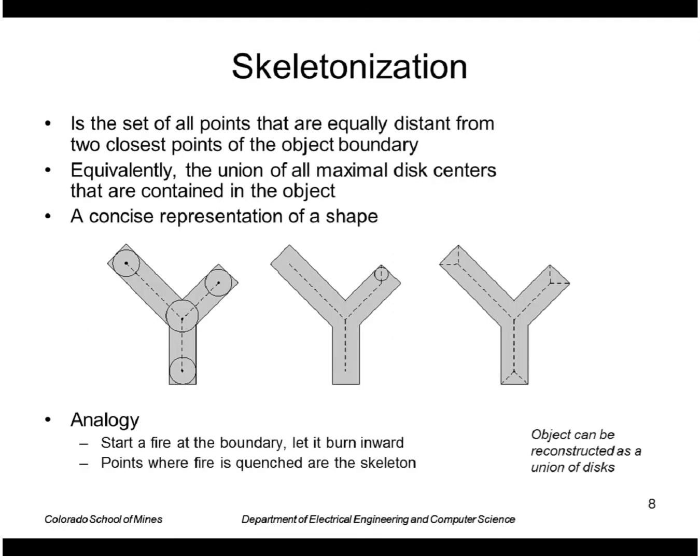Skeletonization is very useful for extracting properties of regions. It's a concise representation of a shape. So basically we want the skeleton or just a few line segments that describe the shape like this. It's defined as the set of all points that are equally distant from the two closest points of the object boundary. Equivalently, the union of all maximal disk centers that are contained in the object.